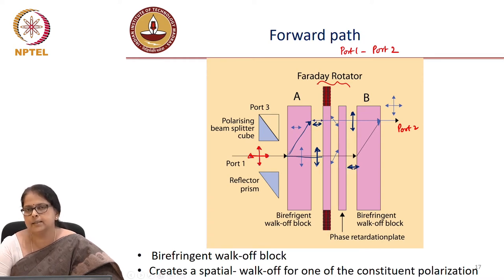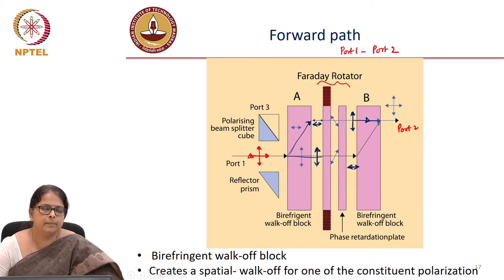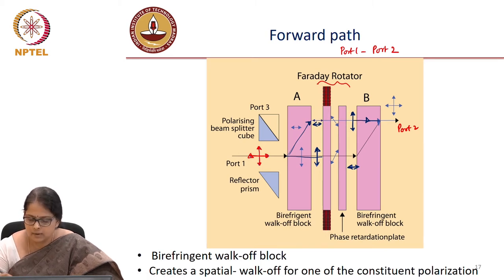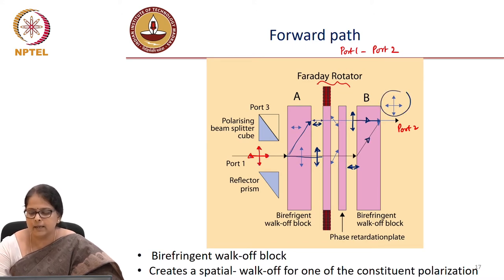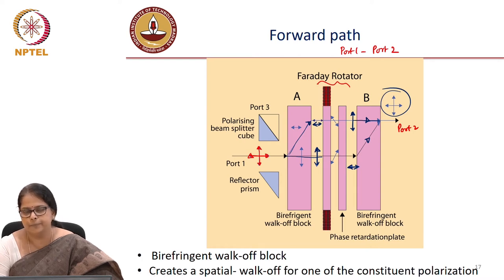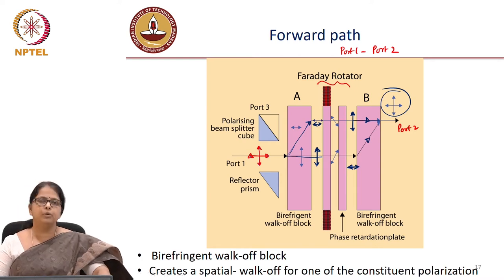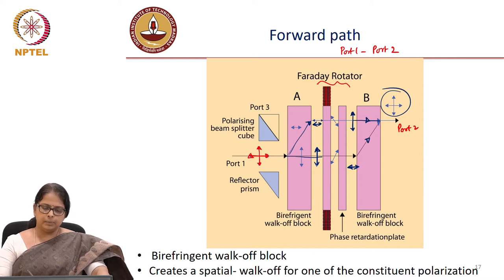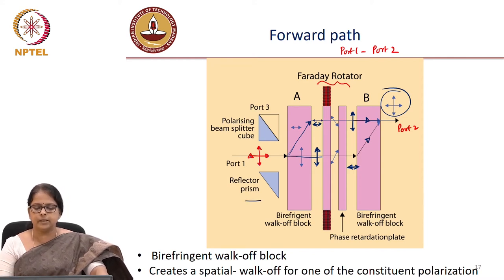Again, it sees the same birefringent walk-off block, so the path of the vertical polarization remains intact whereas the horizontal polarization experiences the walk-off. So you get the entire light out at the output of port 2. This is the forward path from port 1 to port 2. There are polarization splitting beam cubes and a reflective prism which are not playing a role in the forward path, but you will see what happens in the return path.